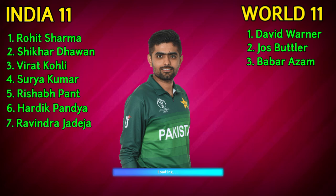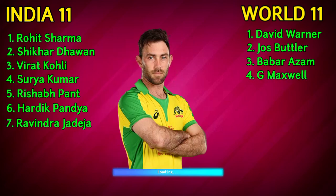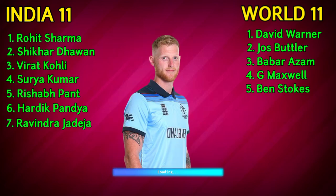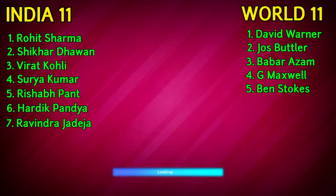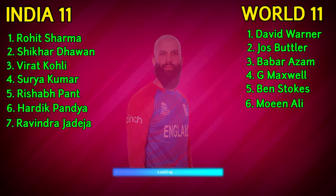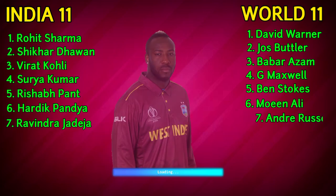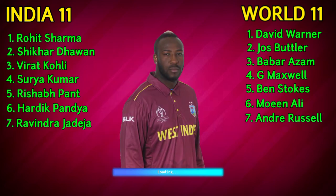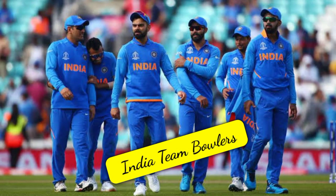World 11 team middle order: number 3 Babar Azam, right-handed batsman. Number 4 Glenn Maxwell, all-rounder. Number 5 Ben Stokes, all-rounder. Number 6 Moeen Ali, all-rounder. Number 7 Andre Russell, all-rounder.